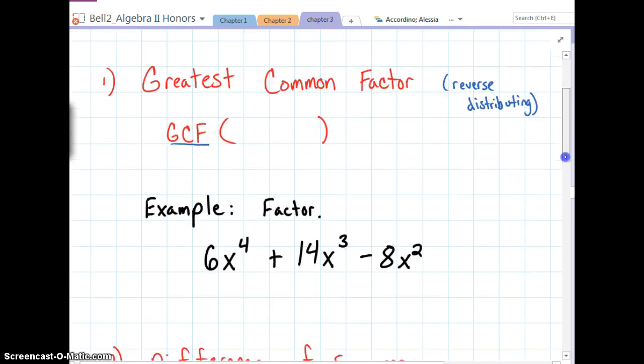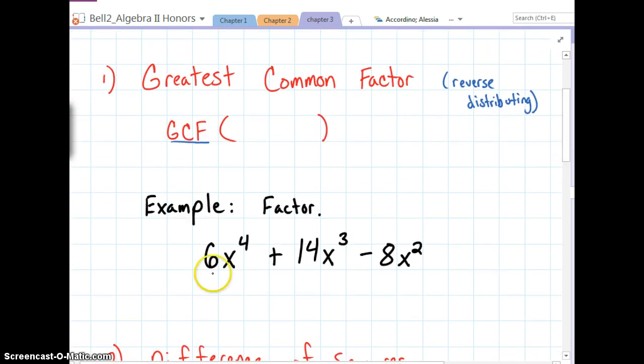So an example of that, if we were given the trinomial 6x to the 4th plus 14x cubed minus 8x squared, the greatest common factor that goes into 6, 14, and 8 is 2. And the greatest common factor that goes into x to the 4th, x cubed, and x squared is x squared. If the variable shows up in all three, we always take the smallest power.